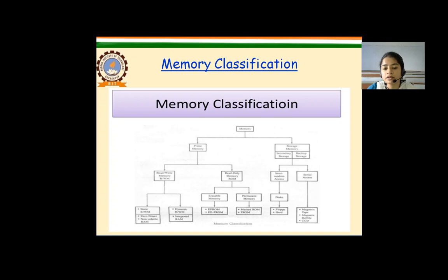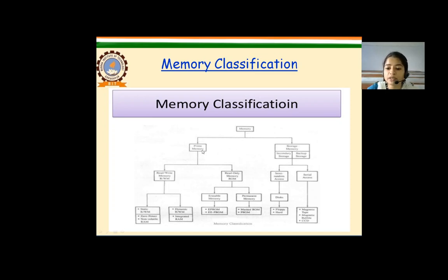Good morning everyone. In this session we will discuss about memory and several types of memories. In the previous session we saw memory classification; now we are going to see the characteristics of different memories. Memory can be categorized into prime memory, which is also called main memory, and storage memory. Prime memory is further classified into read-write memory and read-only memory. The microprocessor uses prime memory to store and execute programs.